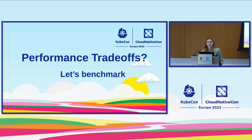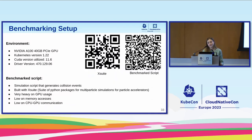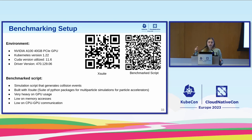Do we have performance trade-offs? Are we losing something by doing the extra work of sharing? For this, we need to do some benchmarking. We're using an NVIDIA 140 gigabyte PCIe GPU on a 122-node Kubernetes cluster, and running a simulation script that generates collision events. This script is built with XSuite — please check it out, it's very cool and written in Python. The script is very heavy on GPU utilization but not very heavy on CPU-to-GPU communication or memory accesses.